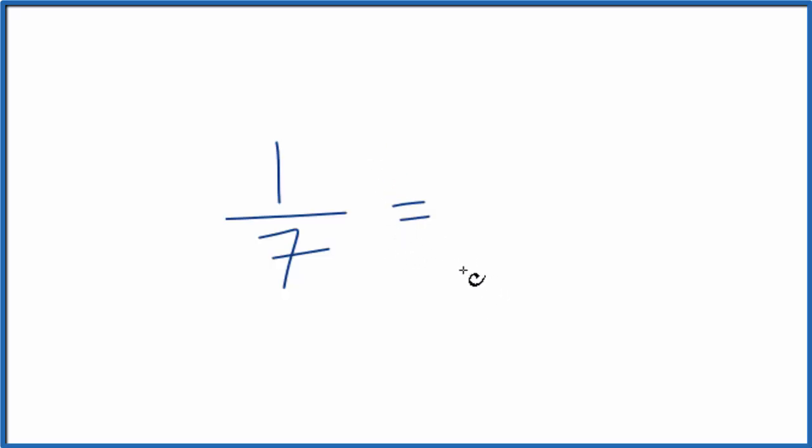First off, what we're trying to do is find fractions that are equal to, they have the same value as 1/7, but have a different numerator and denominator. So we could multiply 1/7 by 1, and that would give us the same value.